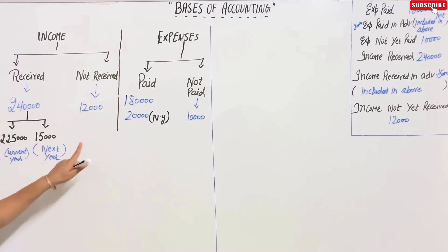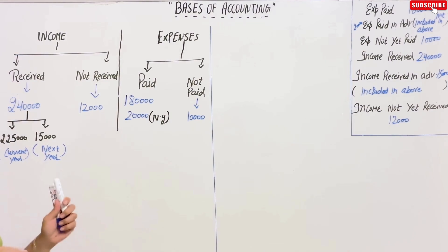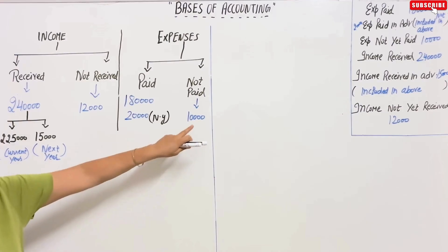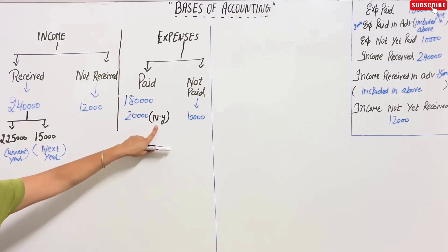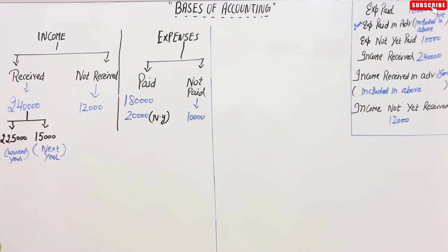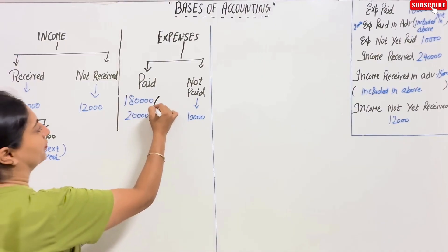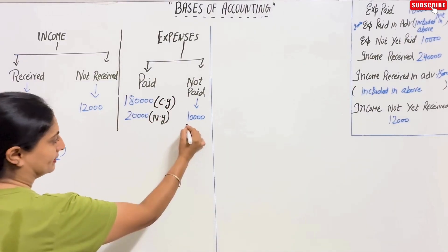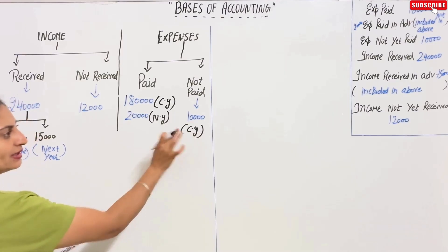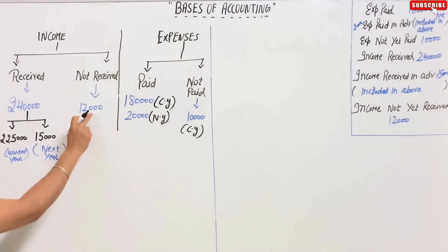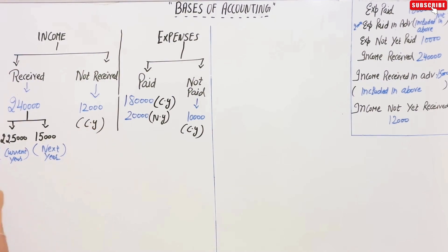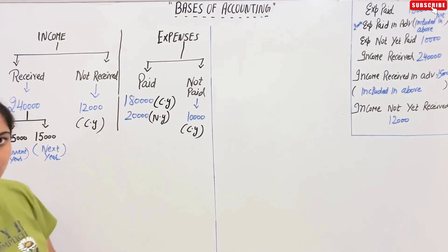Now we have filled the entire chart. Where the word 'advance' appears, we write NY — next year. Wherever no year is mentioned, we write CY — C for current, Y for year. So expenses paid and not yet paid are current year. Received income and not-yet-received income are current year. Advanced amounts are next year.